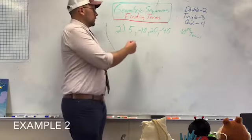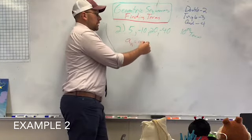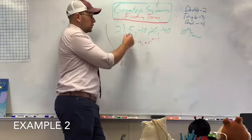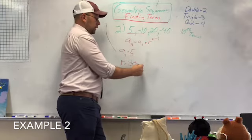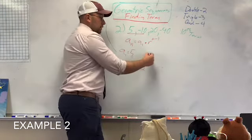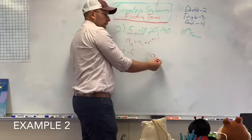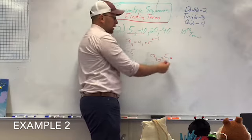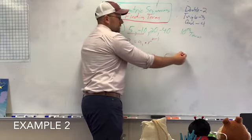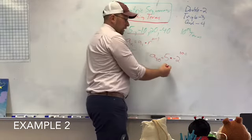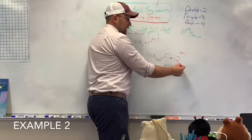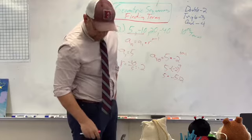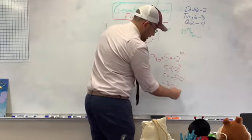Here's our next example. So A sub N equals A1 times R N minus 1. My A1 is 5. And my common ratio, I'm just going to take my first two numbers, negative 10 over 5, which is negative 2. So then I plug everything in. I'm looking for my 10th term, so A sub 10. My A1 is 5. It's always my first term times my common ratio, which I found to be negative 2, raised to the 10 minus 1. It's all about plugging stuff in here. So then I get 5 times negative 2 raised to the 9th. I get 512 times 5 equals negative 2,560 is your answer.